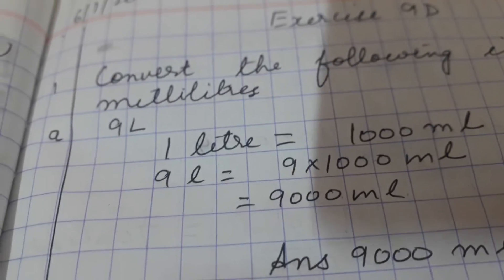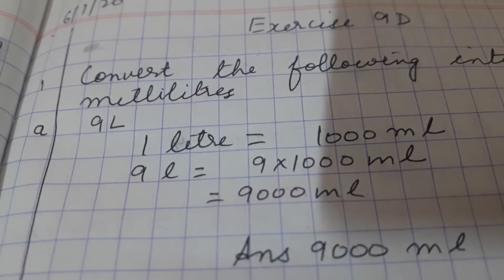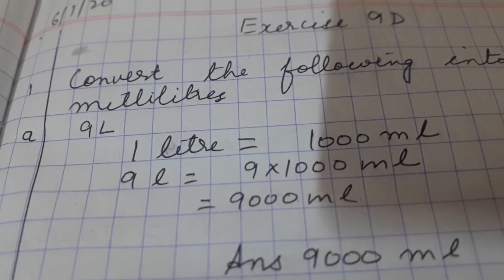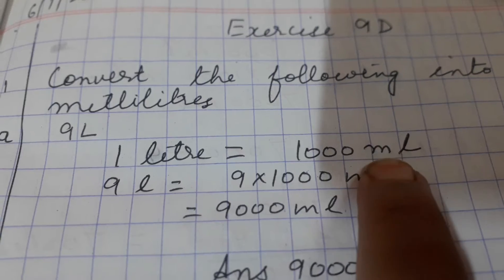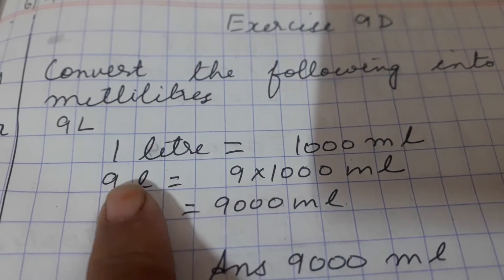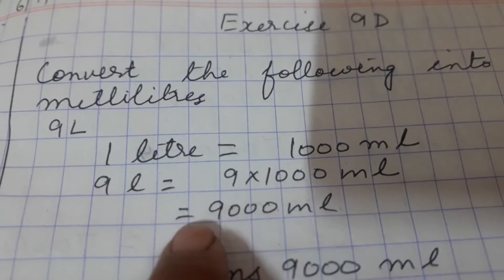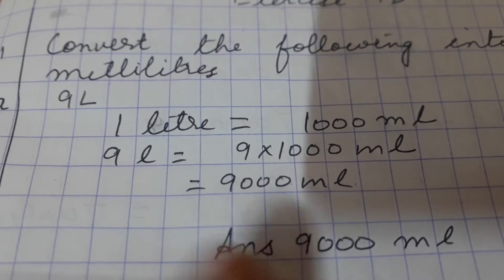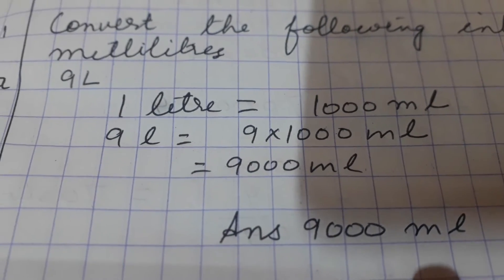Now look at this question: Convert the following into milliliters. Nine liters. You know that one liter is equal to one thousand milliliters. So nine liters is equal to nine multiplied by one thousand, which is equal to nine thousand milliliters.